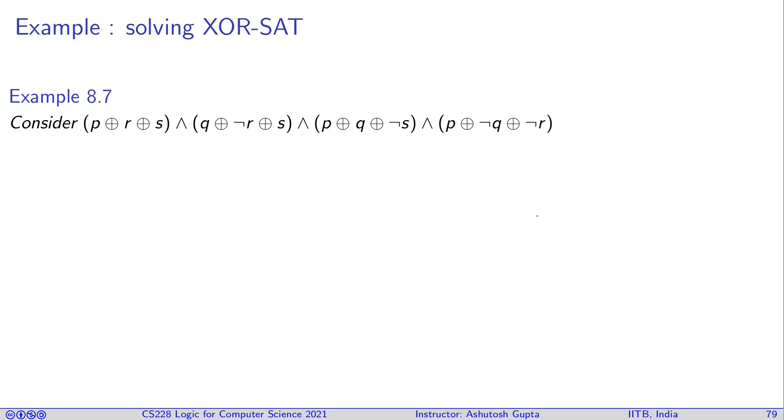Let's look at an example. Here I have four XORs conjuncted. First, I'll try to eliminate p. P occurs in the first clause, and we will say p is equivalent to the negation of this formula. When you negate an XOR, the NOT goes into one of the parts, and you get ¬r ⊕ s. Now substitute this wherever p occurs, and we obtain this formula.